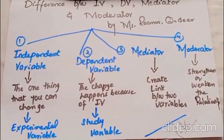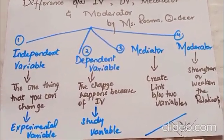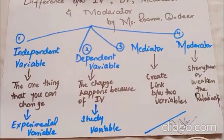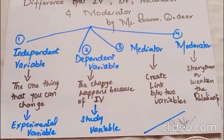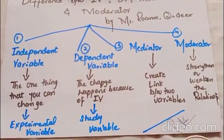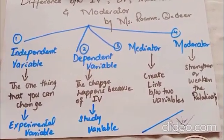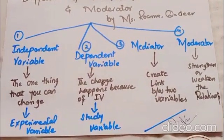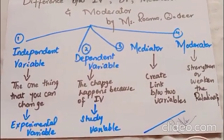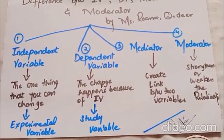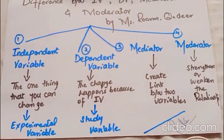Then we have the DV, the dependent variable. If the IV is going to be changed, it has an impact on the DV. The dependent variable is also known as the study variable — the change happens because of the IV.